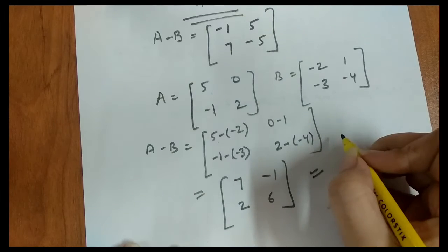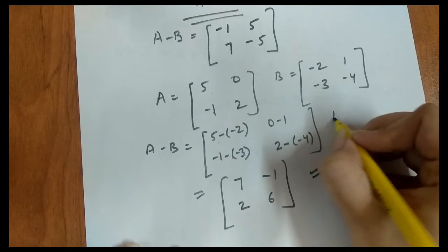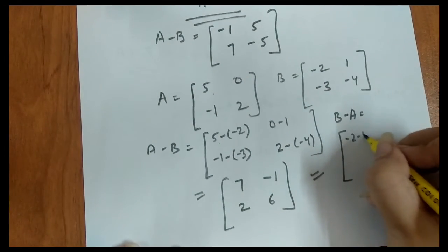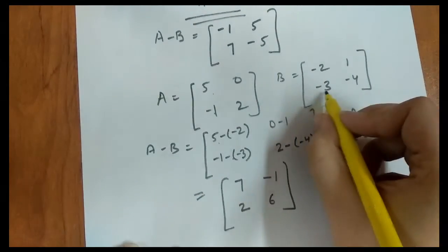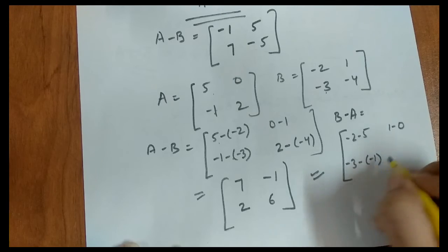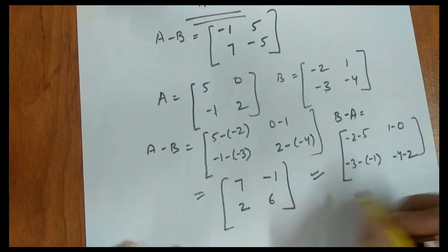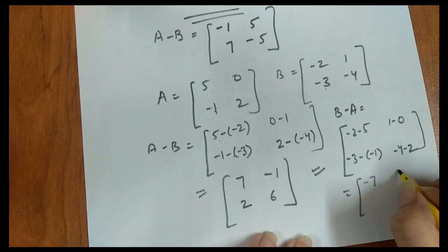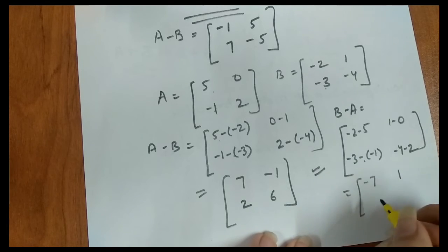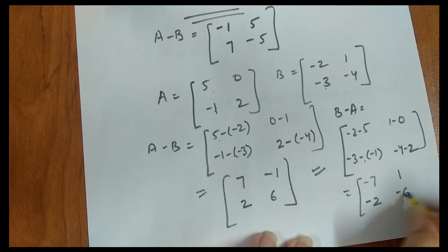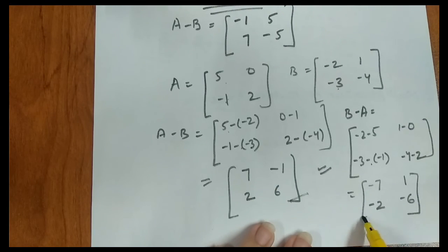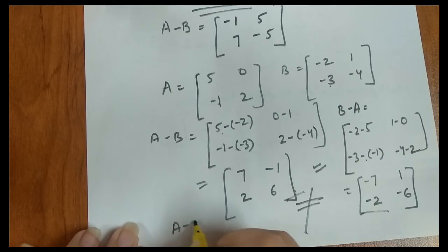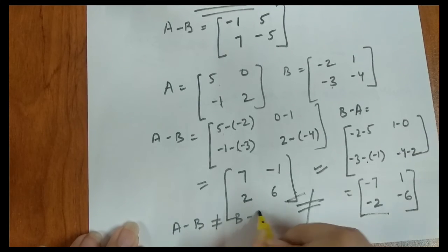Now let's compute B minus A using the same matrices. B minus A: (−2)−5 = −7, 1−0 = 1, (−3)−(−1) = −2, (−4)−2 = −6. So B minus A = [−7, 1, −2, −6]. We can see that A minus B is not equal to B minus A.